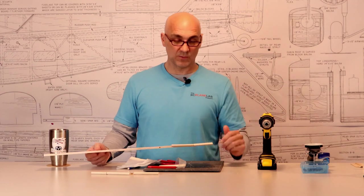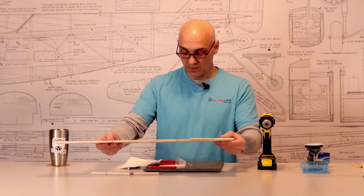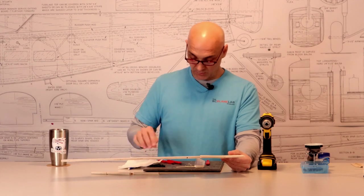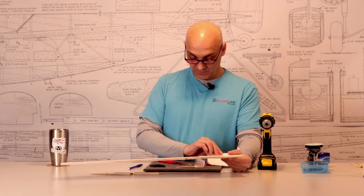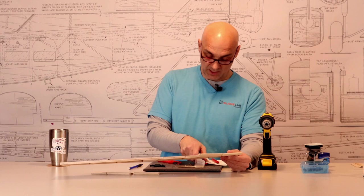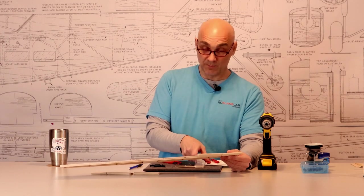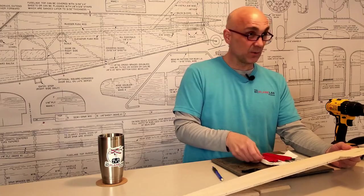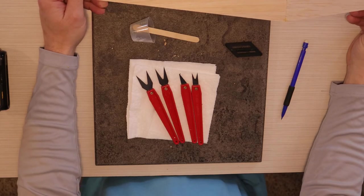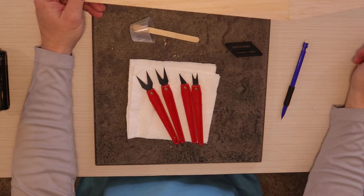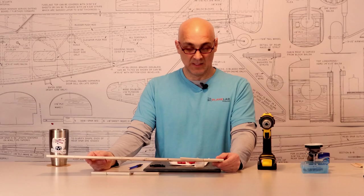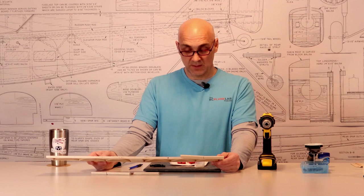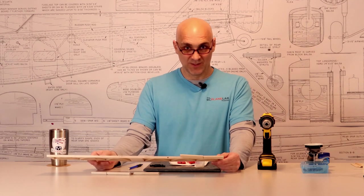And that's how I install a flat hinge with the Dubro hinge slotting kit. Pretty handy little setup. I've used it lots and lots of times. I've had these for many years. Don't use them as much as I used to since I went to using mostly Robart pin style hinges, but I do break these out from time to time for projects like this one. So hope you enjoyed that. I hope you learned something. Be sure to check out our other videos. Thanks for watchin'.